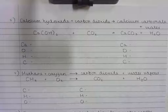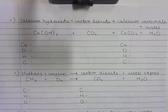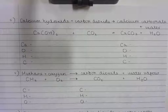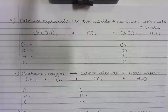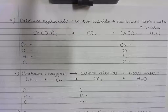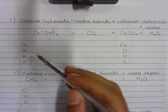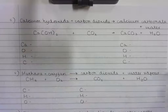This is the balancing chemical equations video number five. I have completed the first three steps in pen. One, written out the word equation. Two, written out the chemical equation. And three, written out the chemical symbols for the atoms that react in the reaction on the reactant and the product side of the equation.